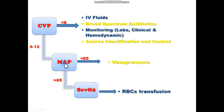After mean arterial pressure above 65 is achieved, we taper off norepinephrine and other vasopressors. Then we check the central venous oxyhemoglobin saturation — if it's less than 70%, we transfuse the patient with RBCs to keep hemoglobin levels at seven.